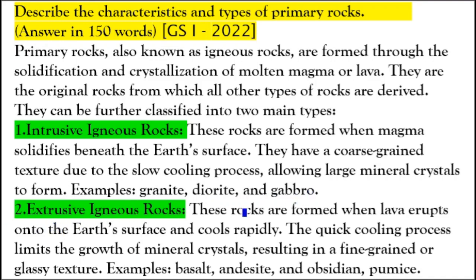Extrusive igneous rocks are formed when lava erupts onto the earth's surface and cools rapidly. The quick cooling process limits the growth of mineral crystals, resulting in fine-grained or glassy textures. Examples of extrusive rocks are basalt, andesite, obsidian, and pumice.